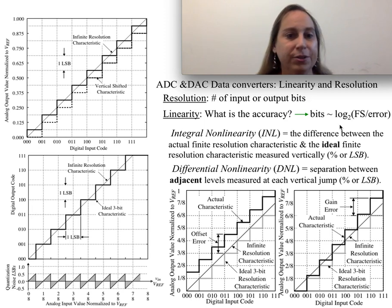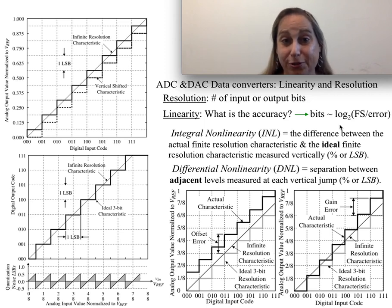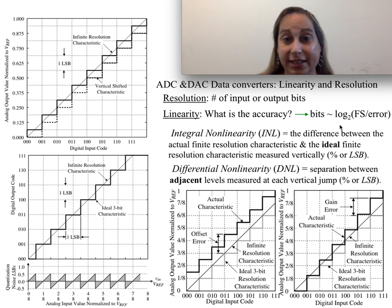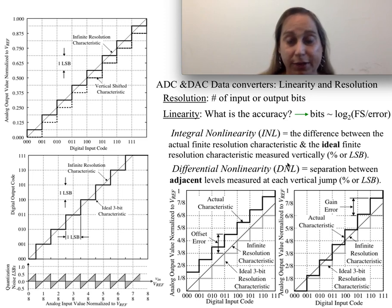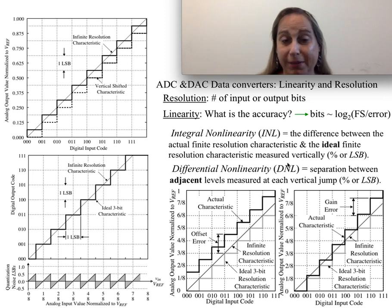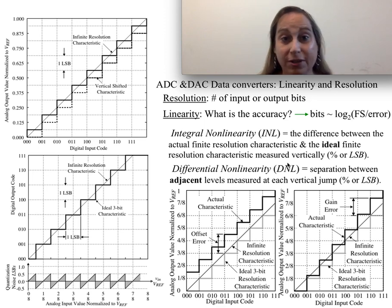One is called integral nonlinearity, or INL, which is basically the difference between the ideal finite-resolution characteristic and the actual measured structure. You typically qualify this in percent or, more likely, in least significant bits of the converter. INL is how far off you are from the ideal characteristic. DNL — differential nonlinearity — says how much error there is between steps: as you go from one code to the next, that step should always be one LSB, but DNL measures how far off it is from exactly one LSB.